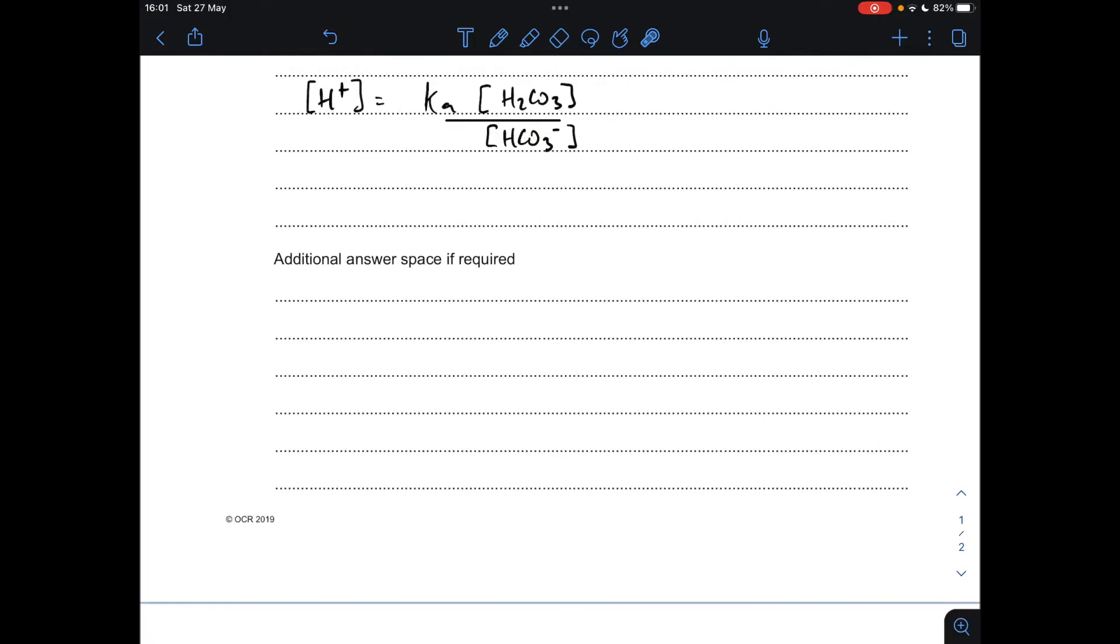Moving on to the calculation now. We've got the Ka expression: the H+ concentration of a buffer is equal to Ka, the acid dissociation constant for the weak acid, multiplied by the acid concentration divided by the salt concentration.